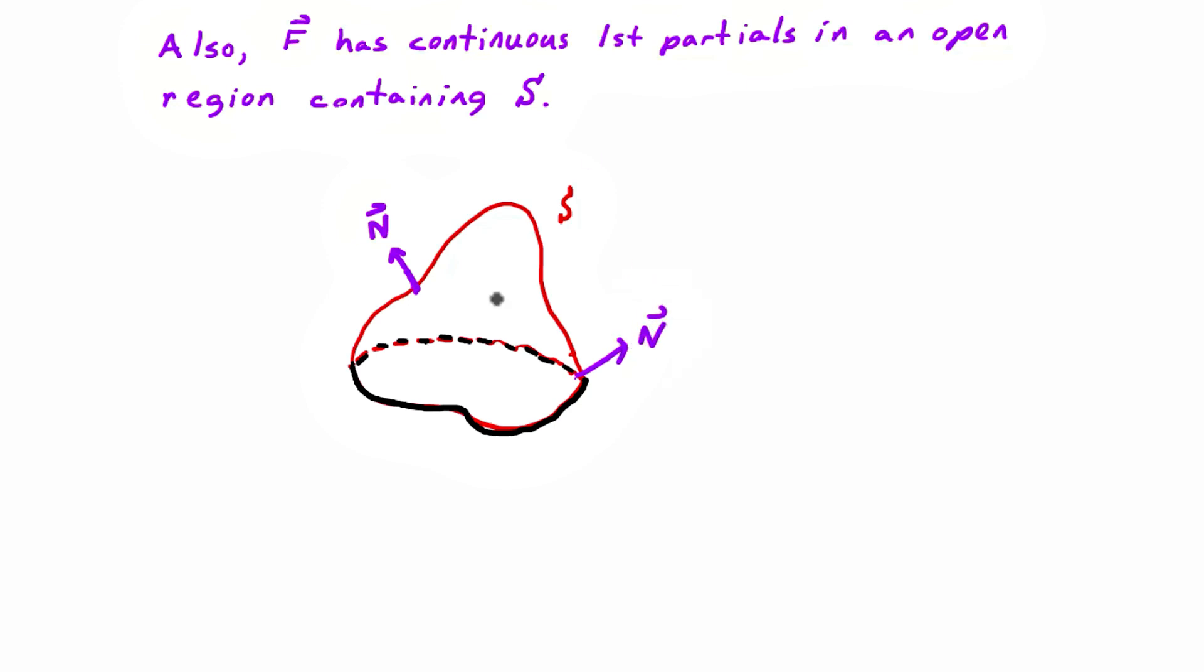So this curve in black here is what we're referring to as the boundary curve. And if you're a little person walking around the base of this hill on that boundary curve, and your head is headed in the same direction as n, then the surface, this hill, will always be on your left if you're walking positively around that curve.